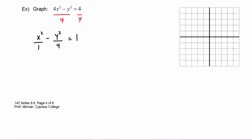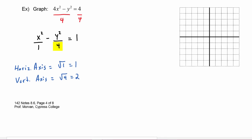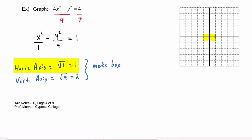The center of our hyperbola is (0, 0). The horizontal axis value a is the square root of 1, which is 1. The vertical axis value b is the square root of 4, which is 2. We use these to make the box: in the x-direction we go ±1, and in the y-direction we go ±2, forming the box, and then the asymptotes go through the corners of that box.